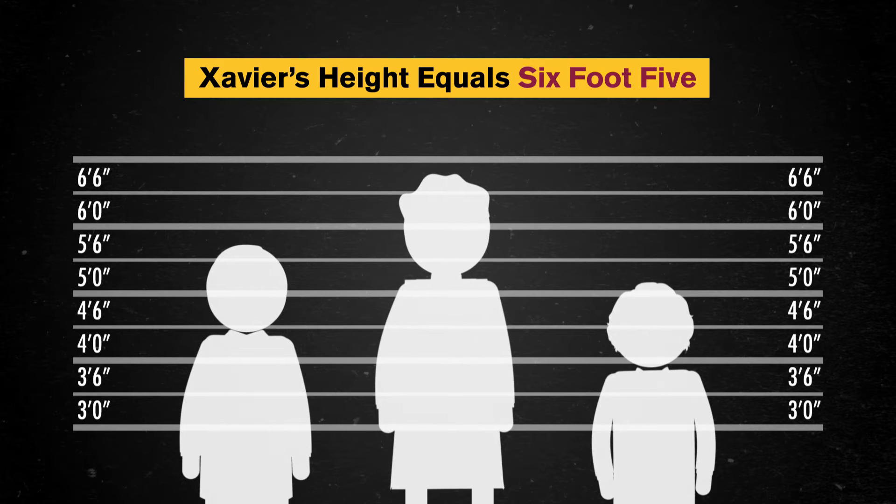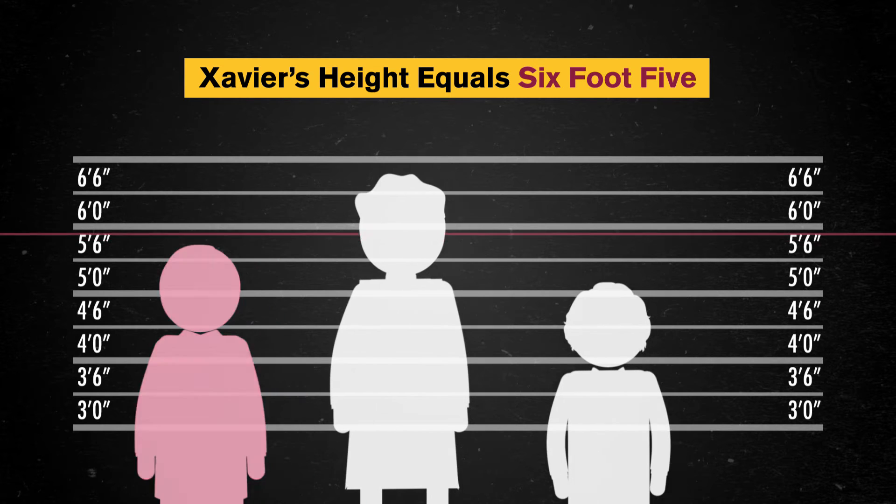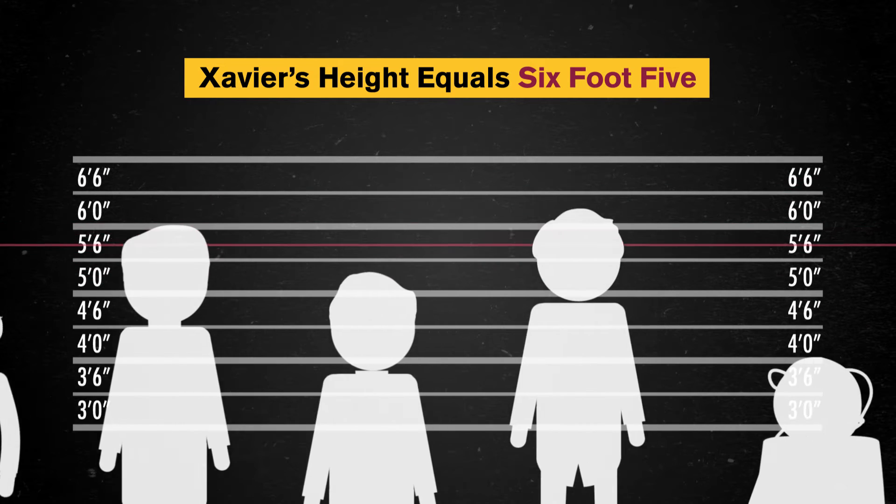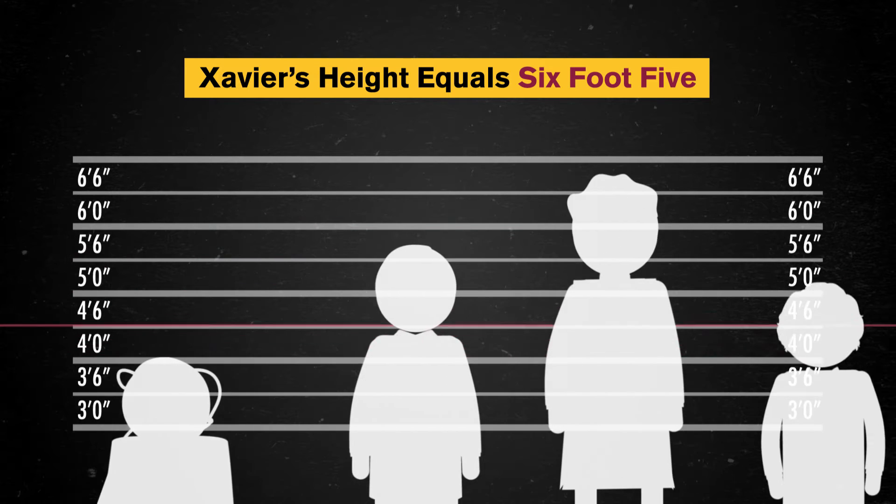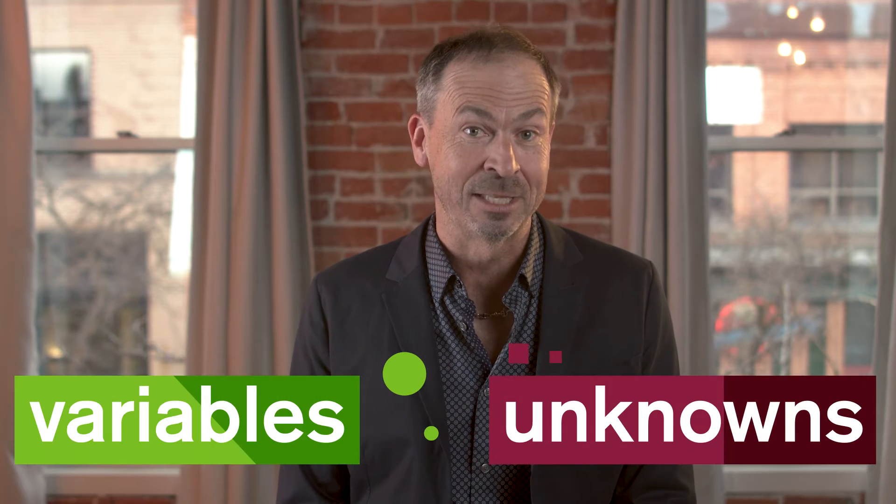Suppose I said Xavier's height equals 6 foot 5. Well, we can't tell whether the sentence is true because we don't know which Xavier I'm talking about. If I pick one, we can then check whether the sentence is true. But checking every Xavier in the world would take a super long time. Instead, we need a strategy for finding all the solutions, or the values that make my sentence true. And that's the central idea of algebra. The fundamental branch of mathematics where we work with math sentences that contain mystery quantities called variables or unknowns.